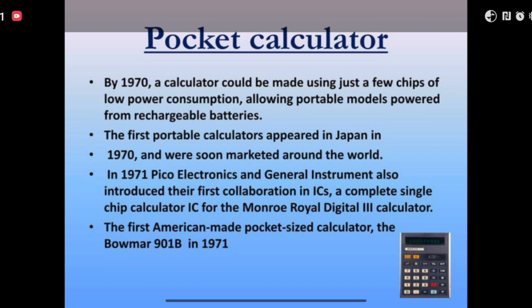The first portable calculator appeared in Japan in 1970, and was soon marketed around the world. In 1971, Pico Electronics and General Instrument also introduced their first collaboration in ICs, a complete single-chip calculator IC for the Monroe Royal Digital III calculator. The first American-made pocket-sized calculator was the Bowmar 901B in 1971.